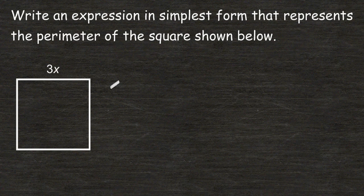And with a square, we know that all four sides are exactly the same length. So, because this side is 3x, this side must be 3x as well, as well as this side and this side.